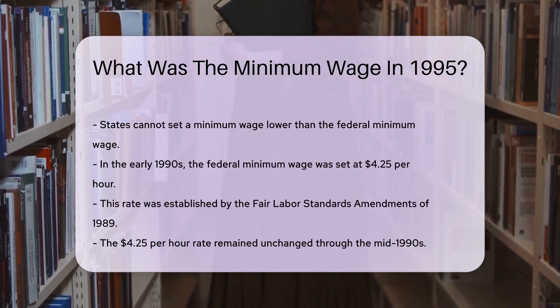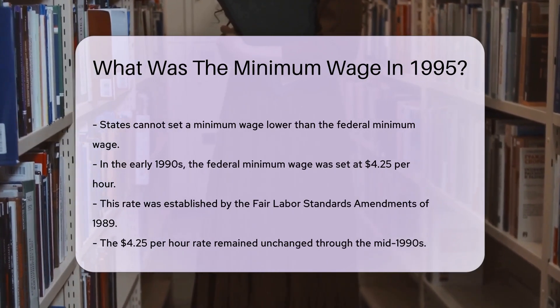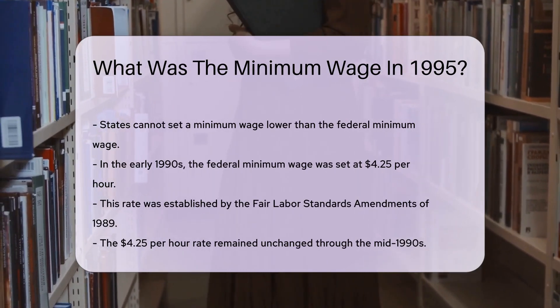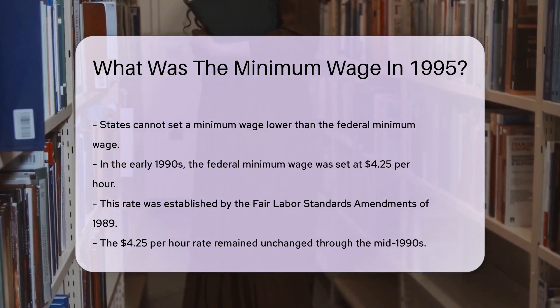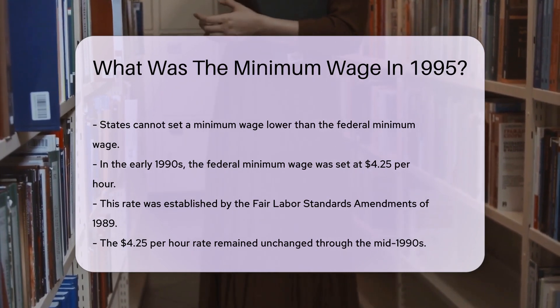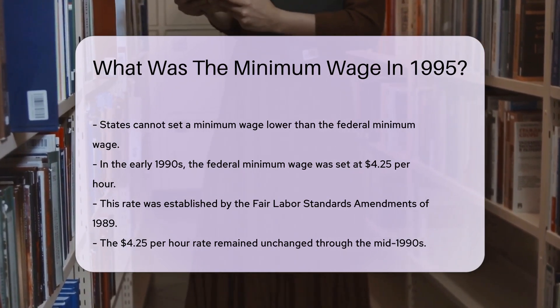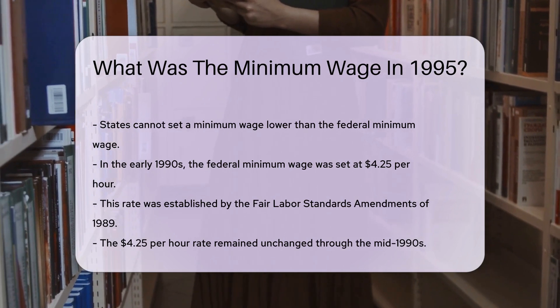In the early 1990s, the federal minimum wage was set at $4.25 per hour. This rate was established by the Fair Labor Standards Amendments of 1989 and remained unchanged through the mid-1990s.